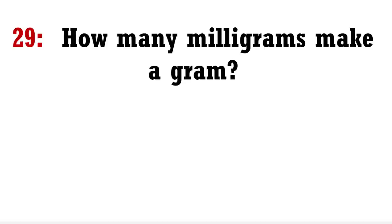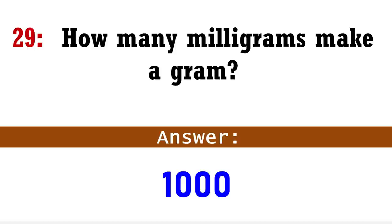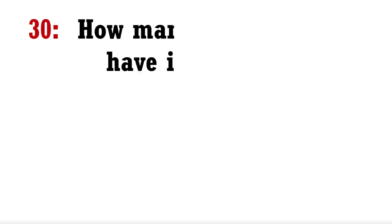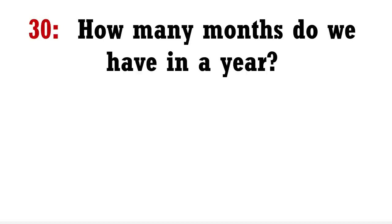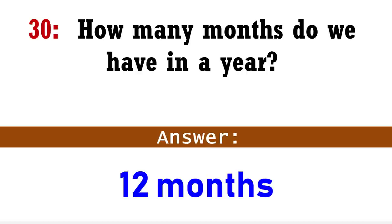How many milligrams make a gram? Answer: One thousand. How many months do we have in a year? Answer: Twelve months.